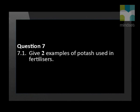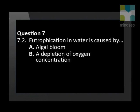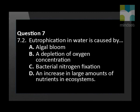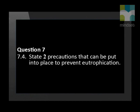Question 7. Give two examples of potash used in fertilizers. Eutrophication in water is caused by: algal bloom, a depletion of oxygen concentration, bacterial nitrogen fixation, or an increase in large amounts of nutrients in ecosystems. State two effects of over-fertilizing on the environment. State two precautions that can be put into place to prevent eutrophication.